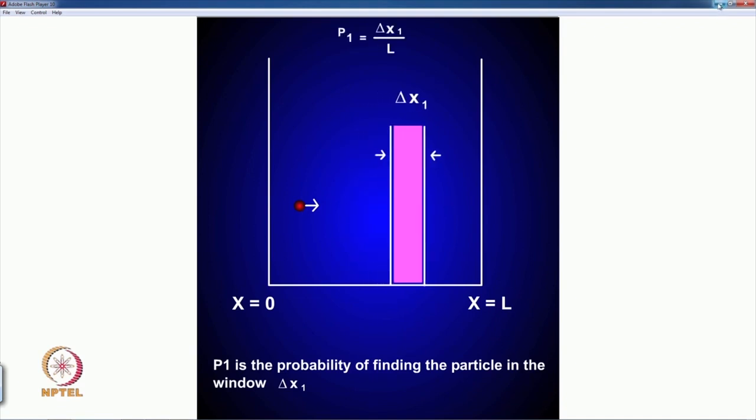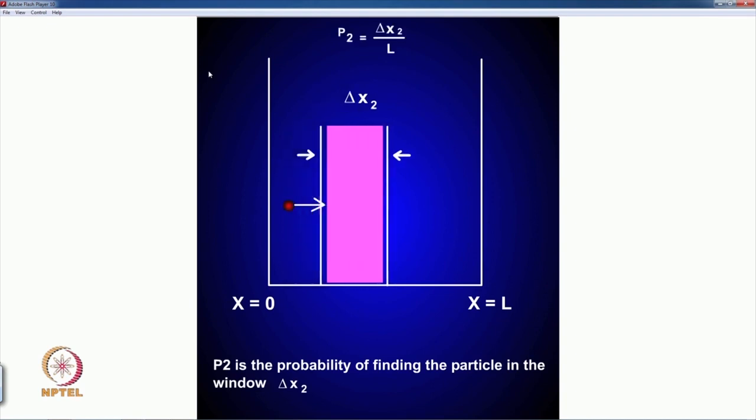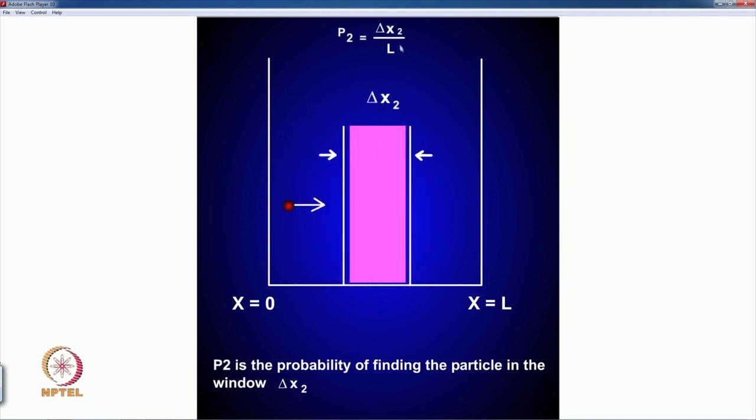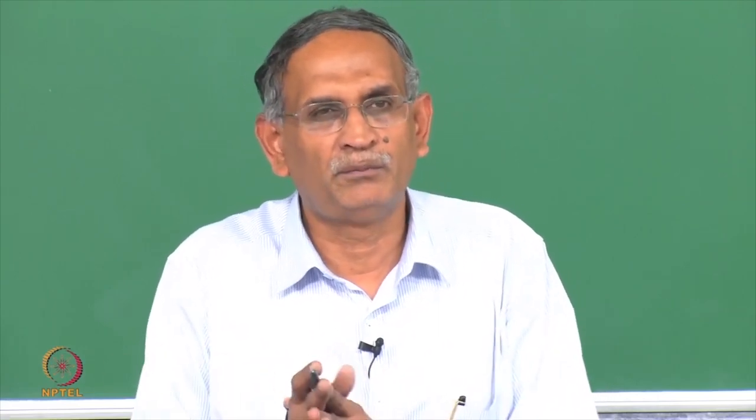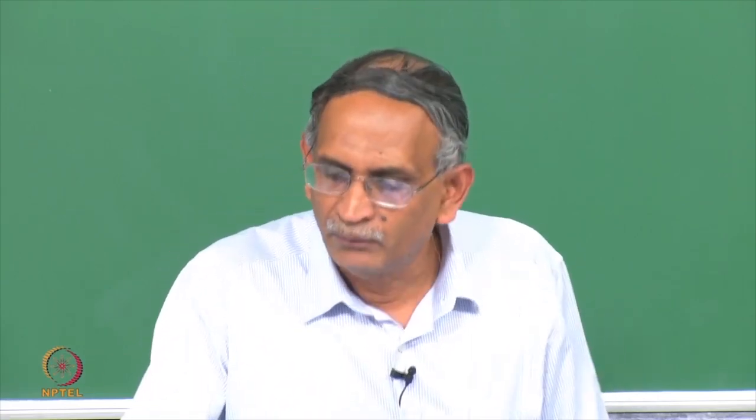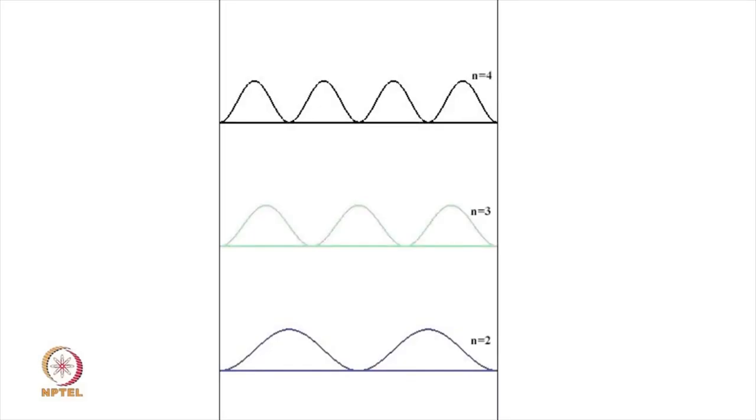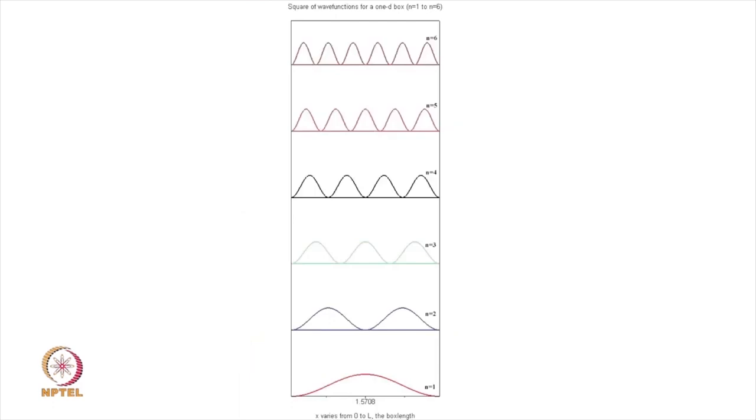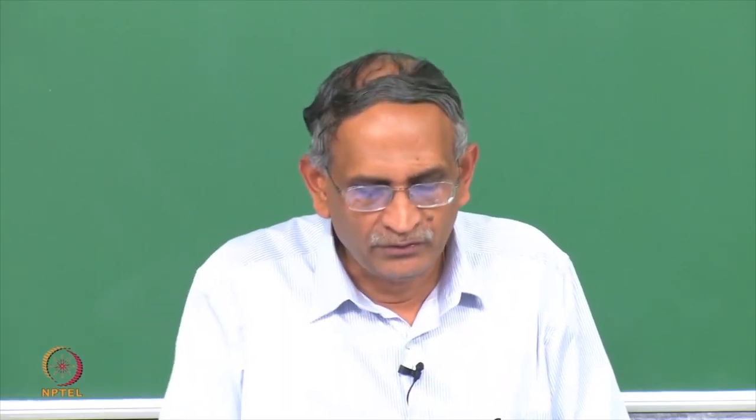If the delta x is different, it is going to be different by that corresponding ratio, namely delta x 2 by l. This is what we expect the particle's position and its probability to be associated with, but in quantum mechanics we do not see that. In this particular case we see that the probability is not uniform and the probability is also not the same for different energies at any given location.